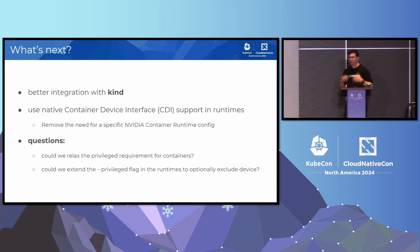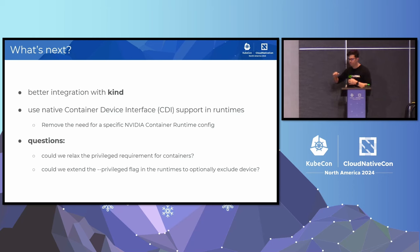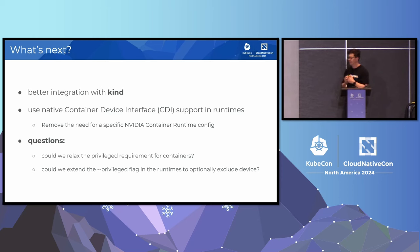One thing is that we'd like to have better integration with Kind. Currently this is a wrapper and we add some functionality there — it's still quite early in development. One of the things we'd like to do is, instead of requiring these mounts, to move to using CDI support — the Container Device Interface — to actually inject specific devices into the Kind nodes. We may still need to do some patching in the background, but this will also remove the need for a special configuration step in the NVIDIA Container Runtime or the NVIDIA Container Toolkit, which is currently a requirement. It would also mean that this could be extended to other container runtimes, not just Docker. Other questions we still need to discuss with the community: could we relax the privilege requirement for containers? If we were able to do that, some of the patching that we do wouldn't be required. We could maybe add an overloaded privilege flag that allows you to exclude the device nodes, for example.